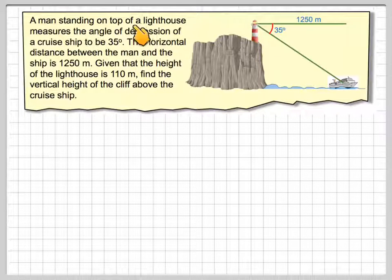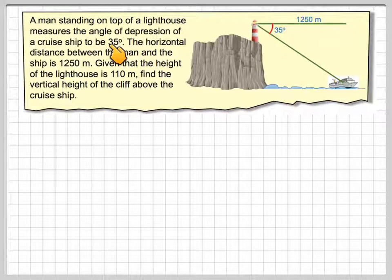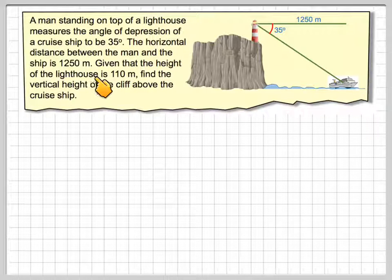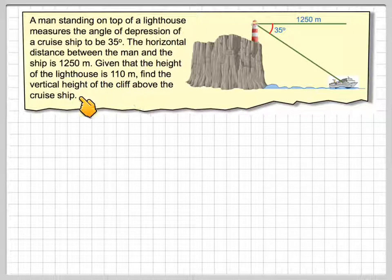A man standing on top of a lighthouse measures the angle of depression of a cruise ship to be 35 degrees. The horizontal distance between the man and the ship is 1,250 metres. Given that the height of the lighthouse is 110 metres, find the vertical height of the cliff above the cruise ship.